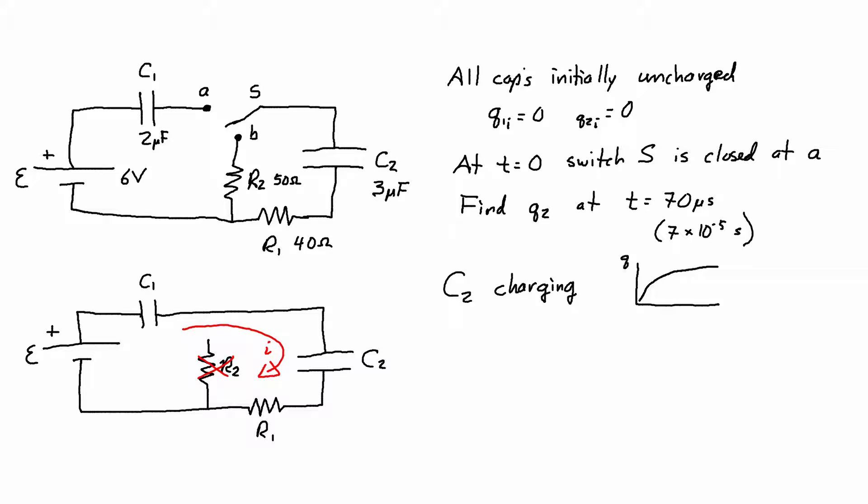And the charge versus time function shows sort of the opposite of an exponential decay. Remember exponential decay starts off at some value but then decays very quickly and eventually approaches 0.